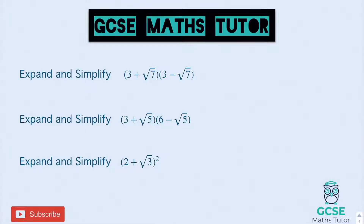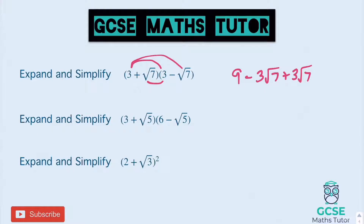Okay, so the first one. Root 3 times root 3 is 9. Root 3 times negative root 7 is negative 3 root 7. Root 7 times 3 is positive 3 root 7. And the final one: root 7 times negative root 7 is negative root 49, which is negative 7. Tidying that up: 9 take away 7 is 2. Negative 3 root 7 add 3 root 7 cancels out to 0. So my final answer for that first one is 2.